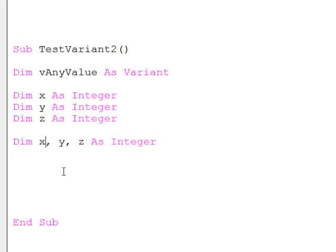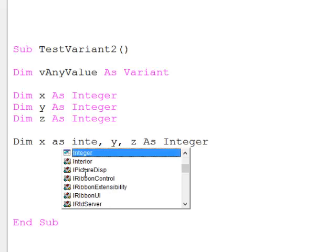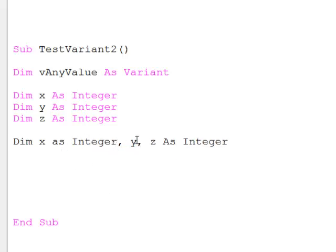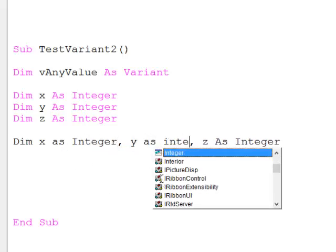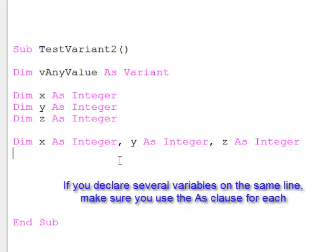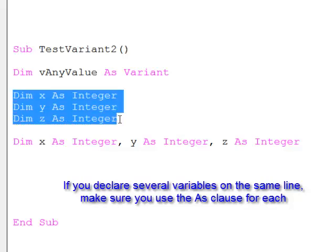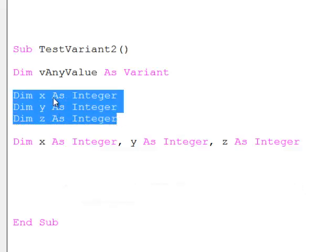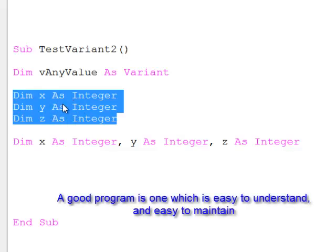You can get away with this, and that will give me three integer variables. This line of code is equivalent to those three lines of code, but those three separate lines of code are better because it's a little bit easier to read and easier for somebody else to maintain.